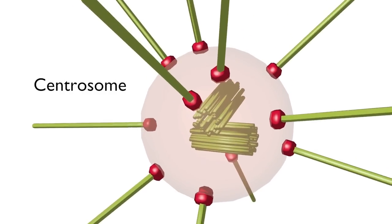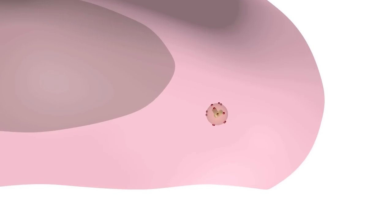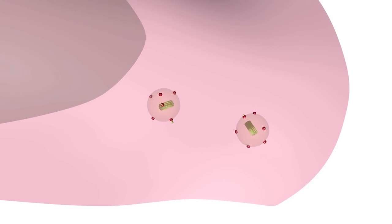Each cell is born with a single centrosome that resides in the cytoplasm. Before mitosis, the centrosome duplicates to form two centrosomes, and these centrosomes begin to nucleate the microtubules that will form a bipolar spindle.